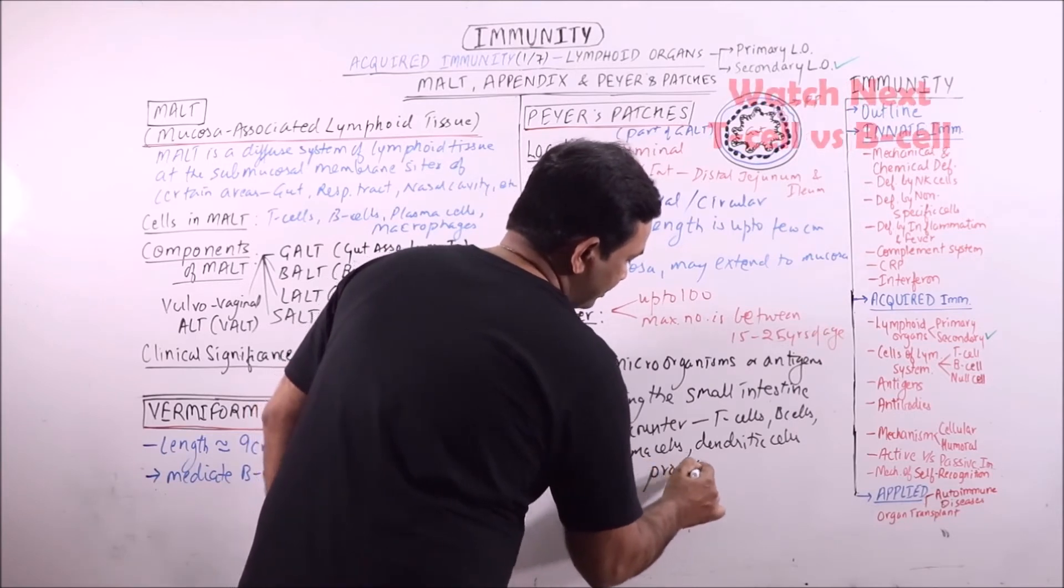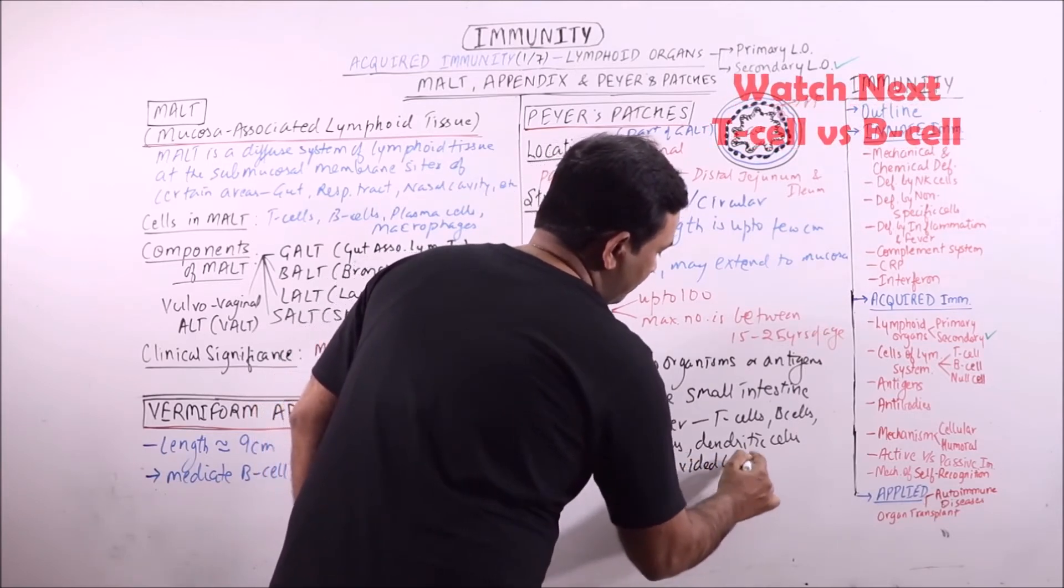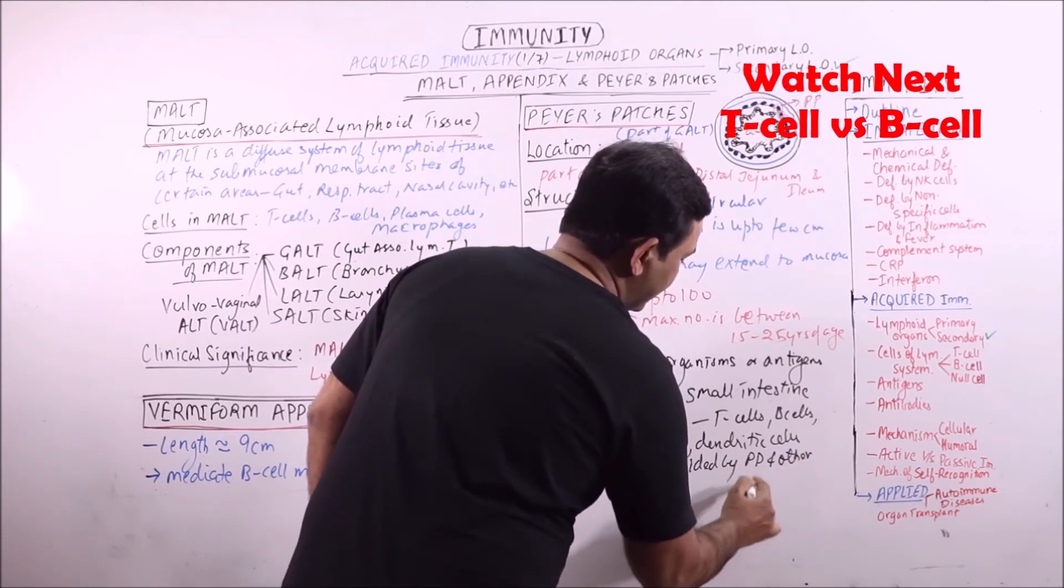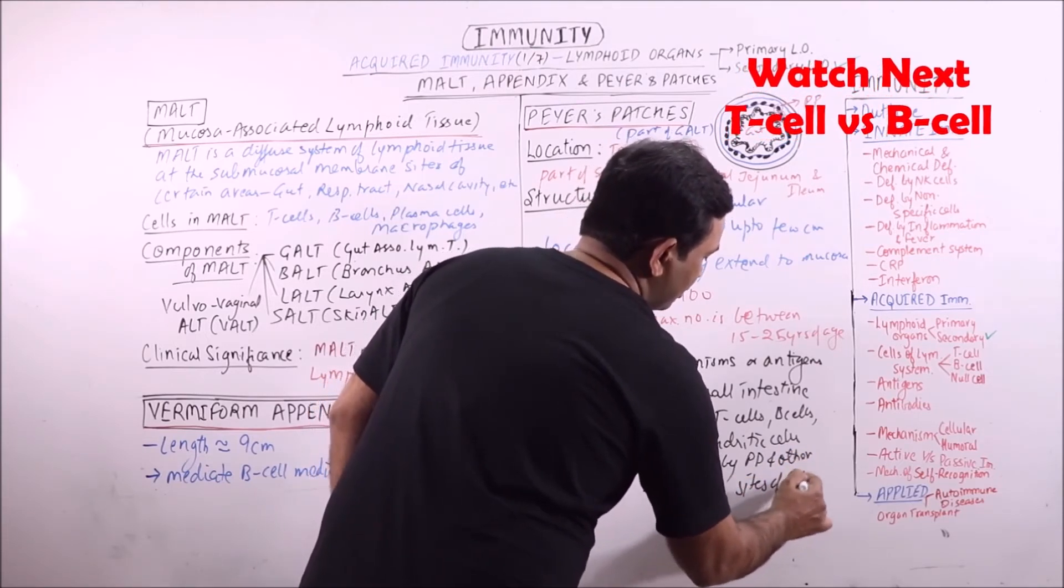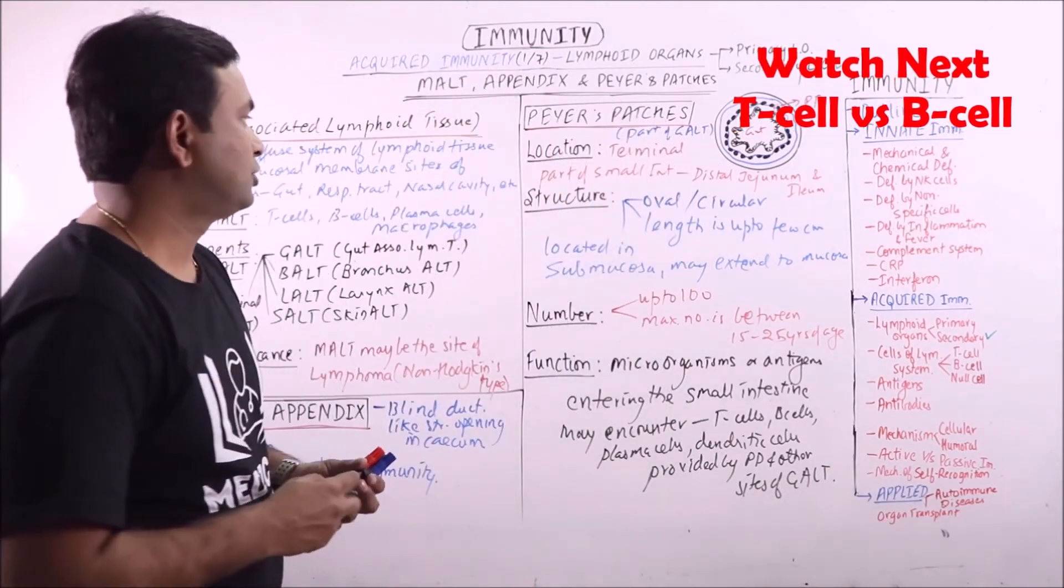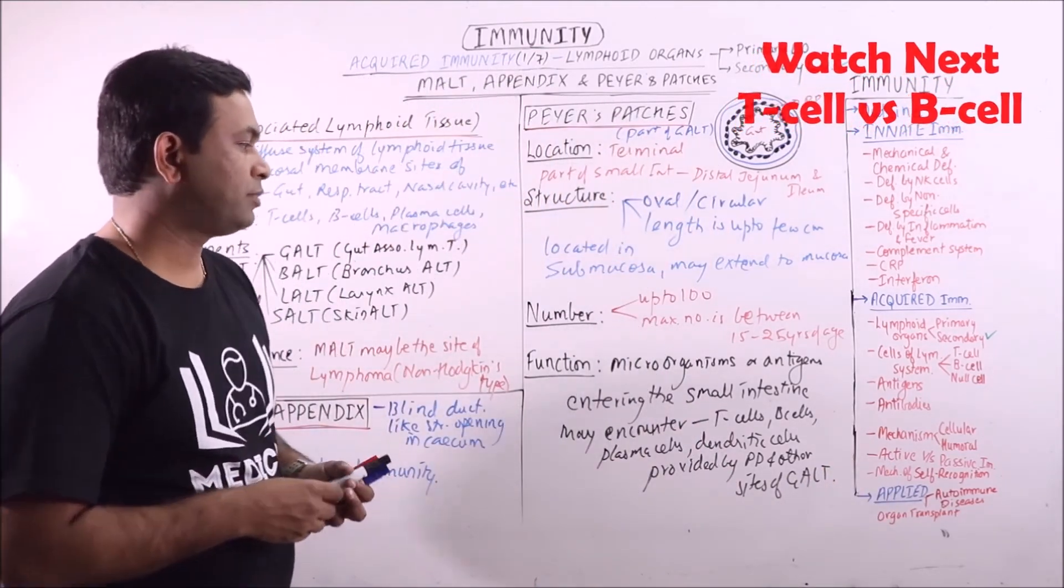dendritic cells provided by Peyer's patches and other sites of gut-associated lymphoid tissue. So this is about the Peyer's patches.